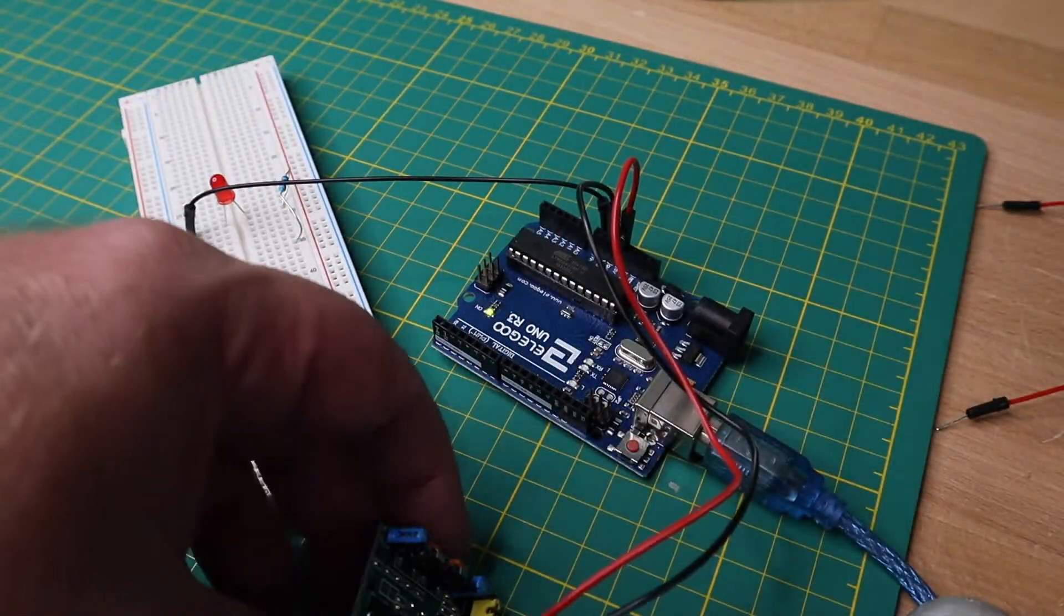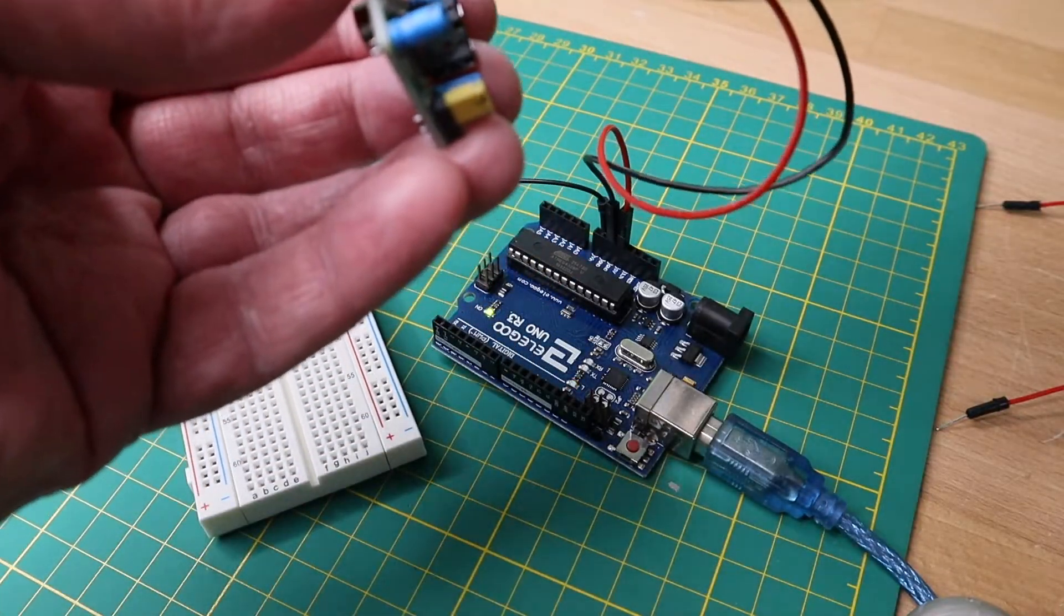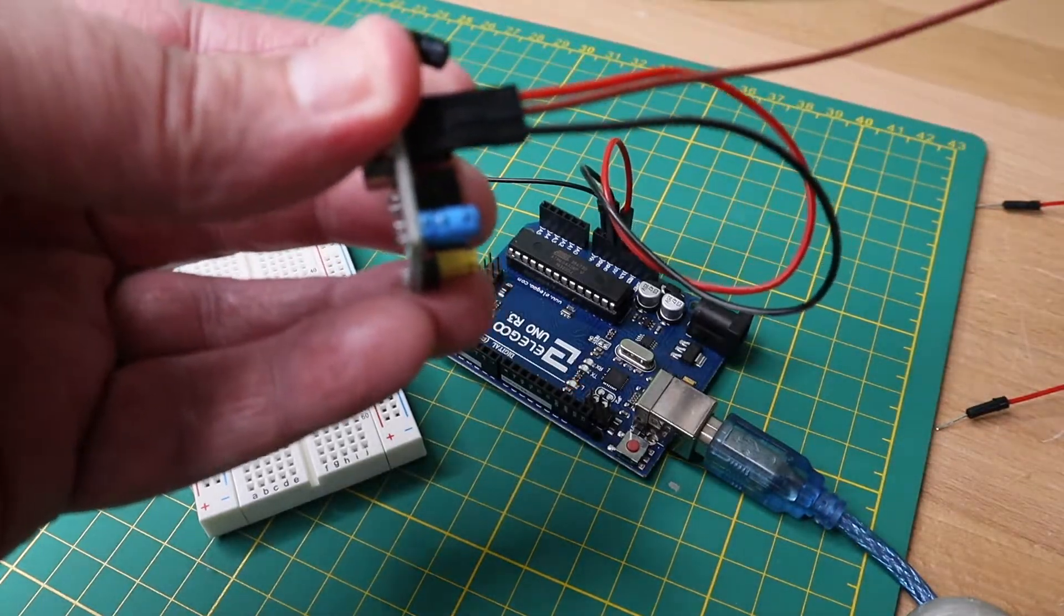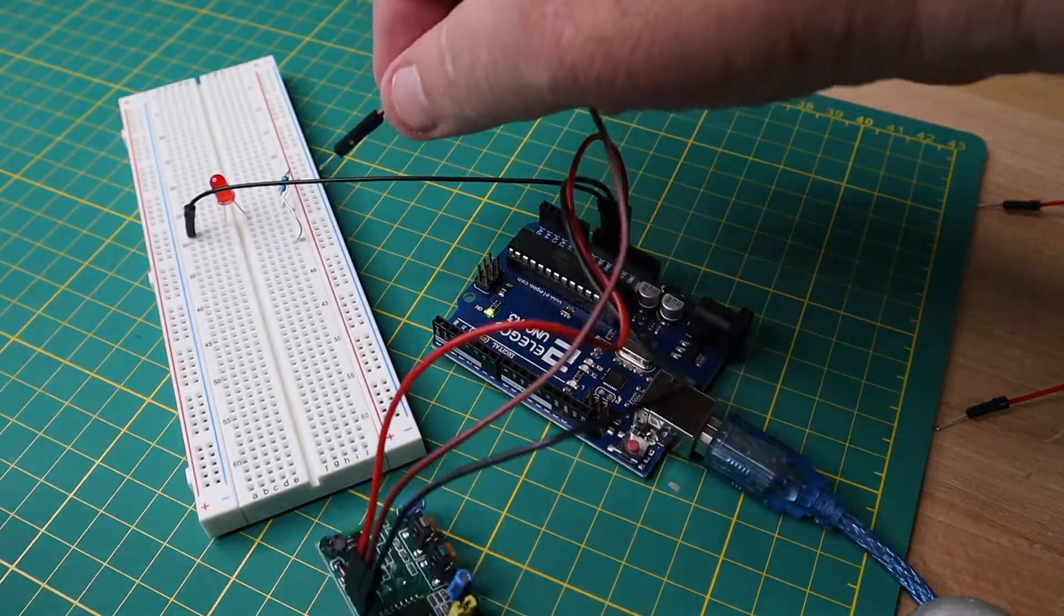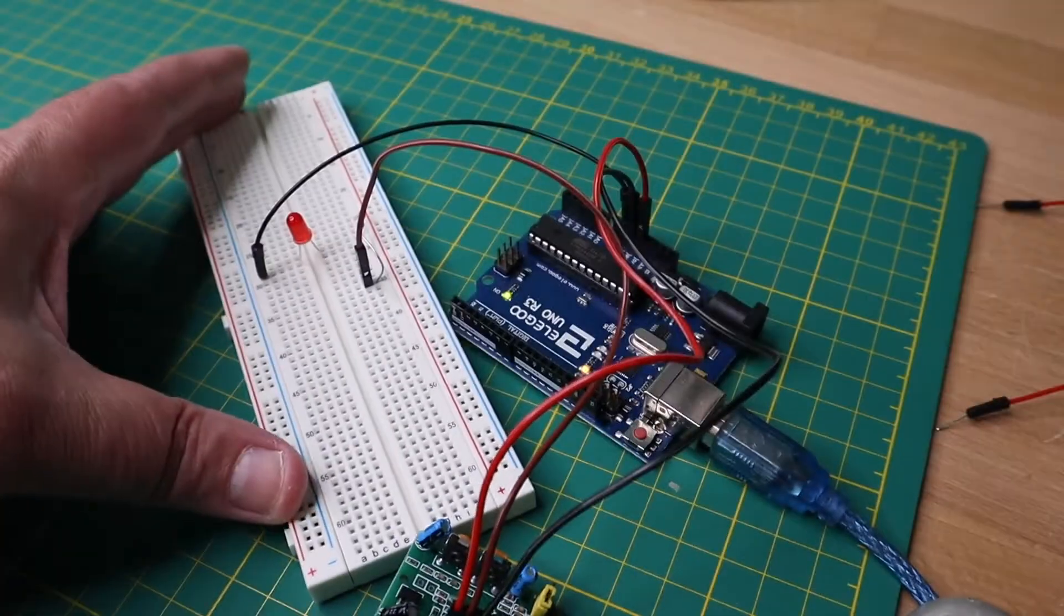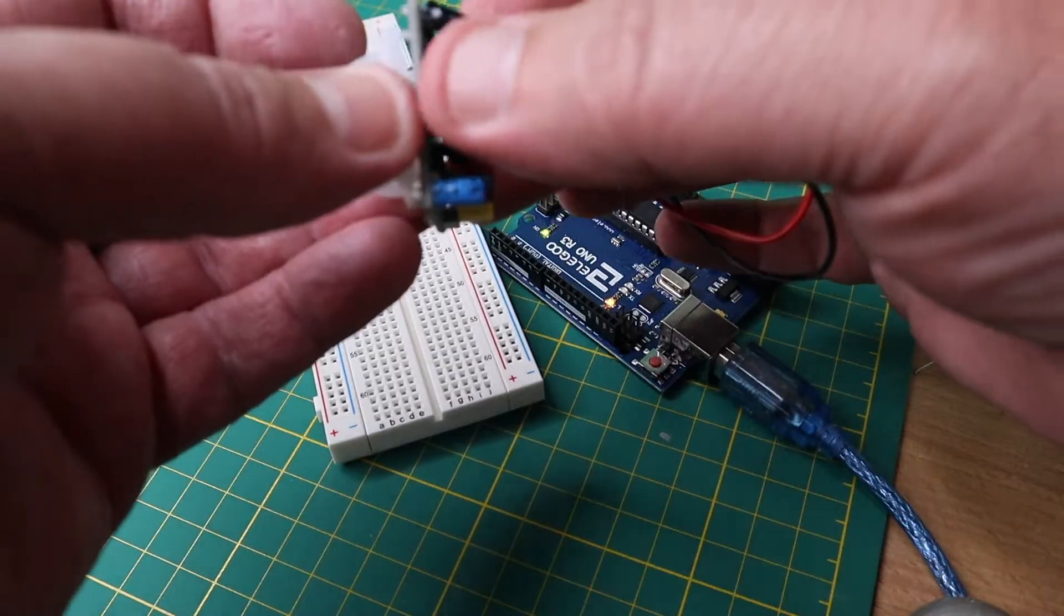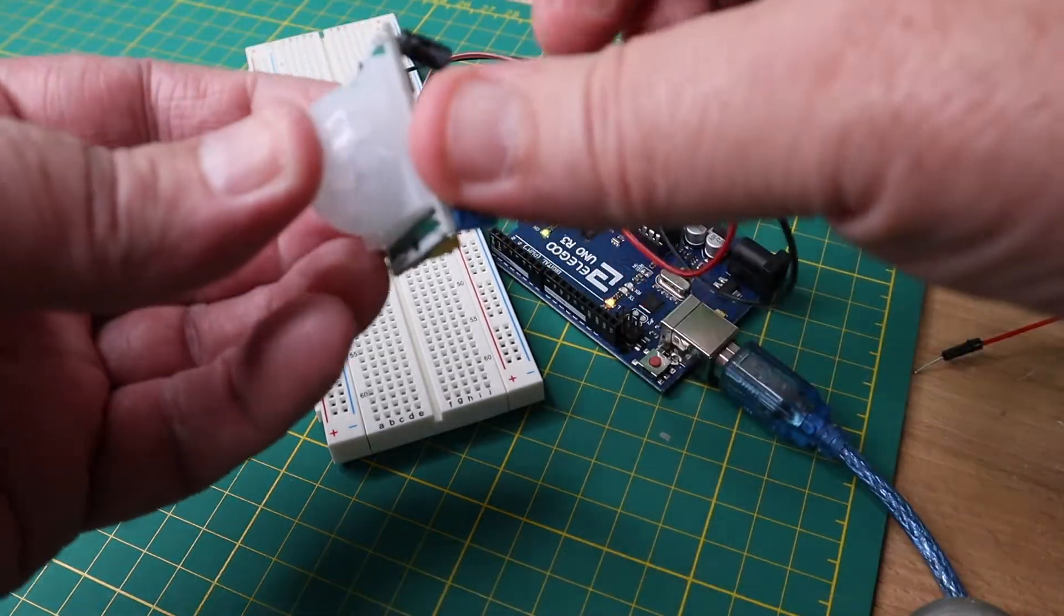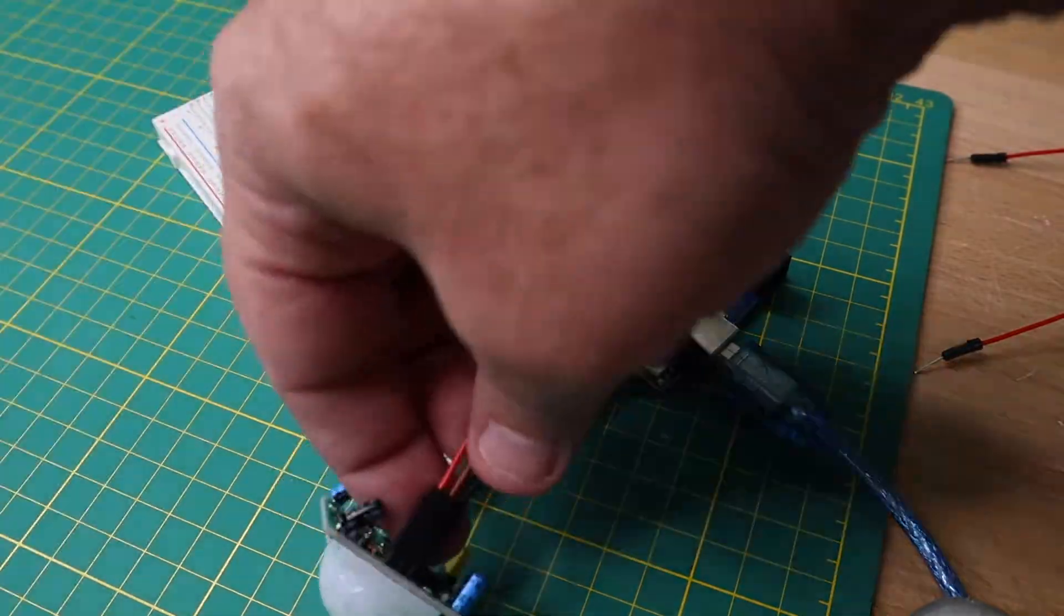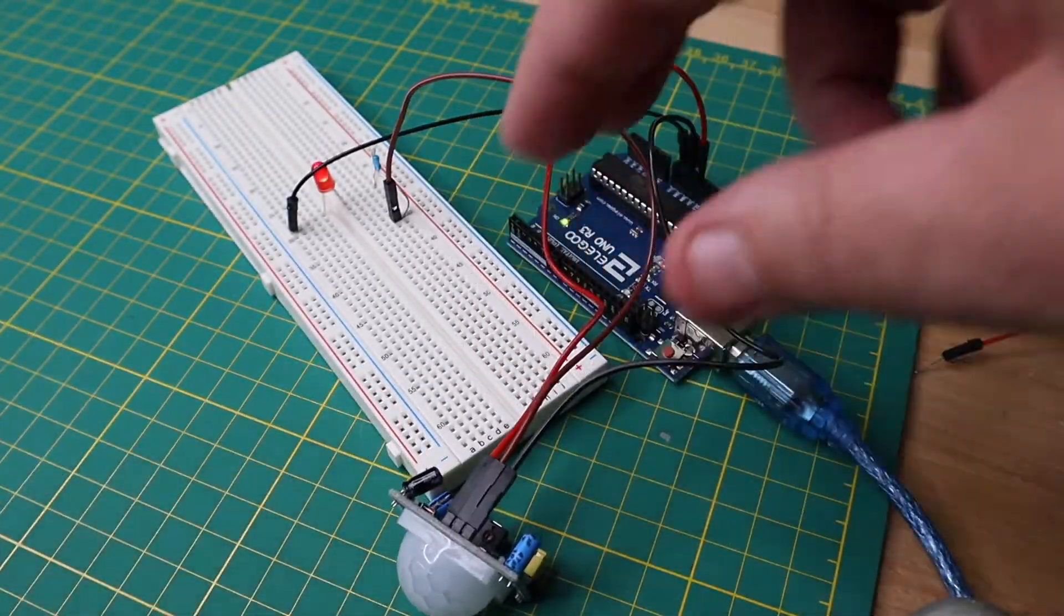And that output is going to go from here, the middle pin, back over to the board here. And finally, I'll put the little plastic cover back on and you can see our LED has already lit up. Let's get a little distance from it and see how it works.